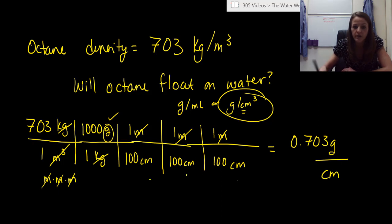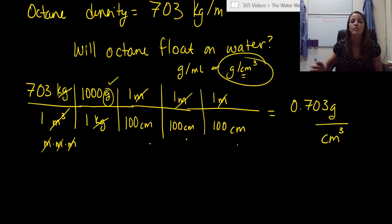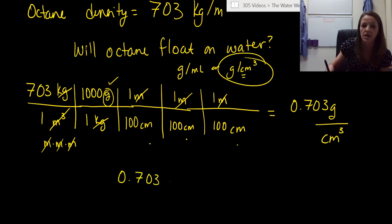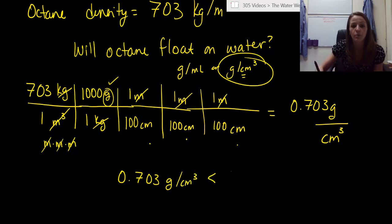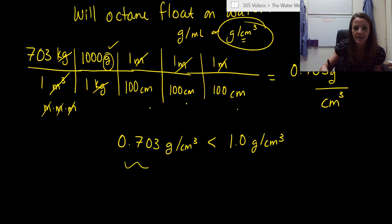I end up with an answer that is 0.703 and that is in grams per centimeter cubed, which is a unit of density. So now we figured this out. We've translated our numbers. So we have it in an appropriate unit. So now we just have to compare the two numbers. So we have our density of our octane, which is grams per centimeters cubed. And we know that this is less than the density of liquid water, which is 1.0 grams per centimeter cubed. So now if it is less, then we know it's going to float. So will octane float on water? Absolutely.